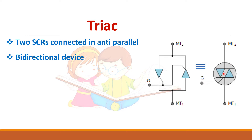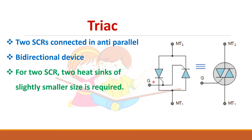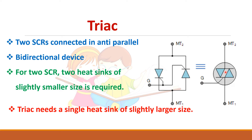Two thyristors in anti-parallel with a gate terminal. The drawback of having two SCRs in anti-parallel is that you need two heat sinks for two different SCRs. But if you use a single TRIAC unit, one heat sink is enough. Moreover, the gate sources should be separated from each other, otherwise there is a possibility of getting shorted.